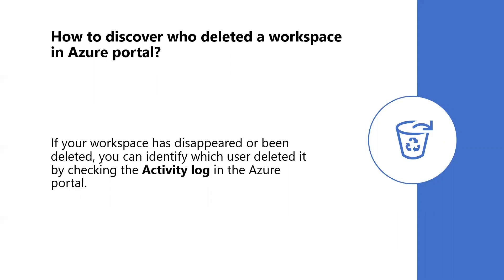How to discover who deleted a workspace in Azure portal? When we deploy an Azure Databricks workspace, we can check the activity log. If our workspace has disappeared or been deleted, we can identify which user deleted it by checking the activity log in the Azure portal. When you go to the Databricks workspace in Azure portal, on the left pane you can see the activity log, which shows when we deployed this resource, when we stopped it, and who deleted this workspace.